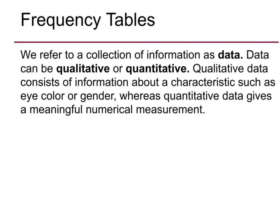The information that we collect is called data. Data can be qualitative or quantitative. Qualitative means it's a characteristic — eye color, gender. Quantitative is a numerical measurement, such as height and weight.